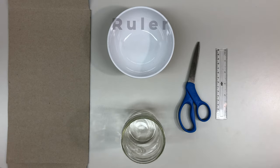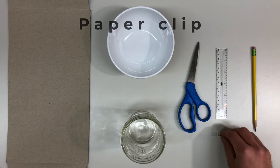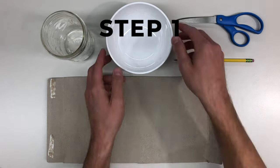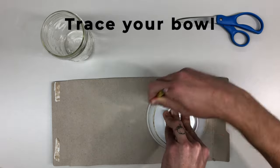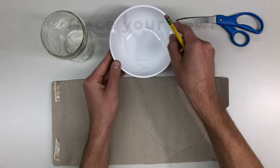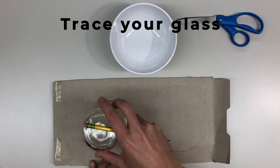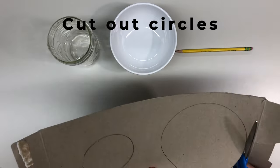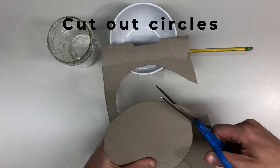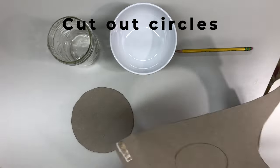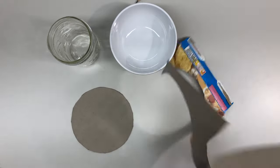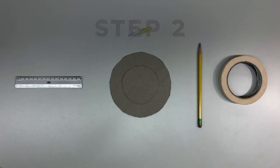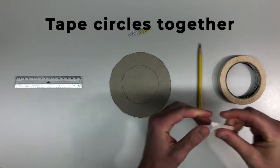Step one: flip your bowl over and trace it on top of your cereal box. Now trace your glass. Then cut out both circles.